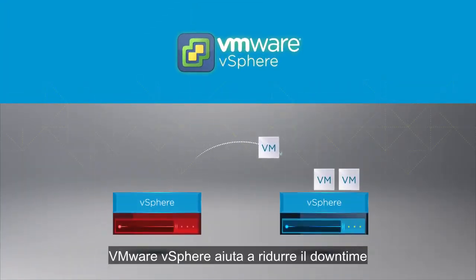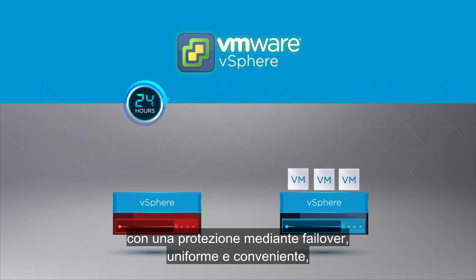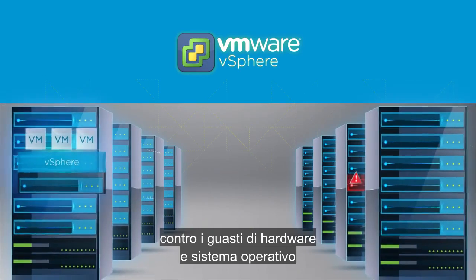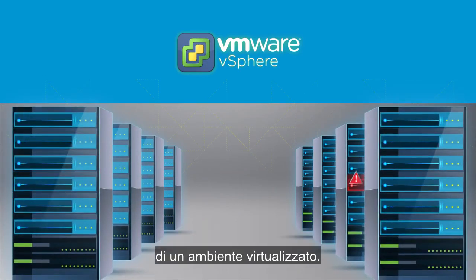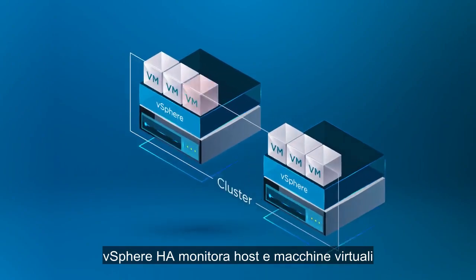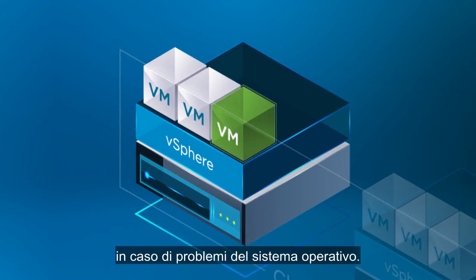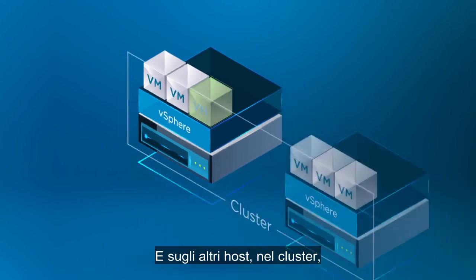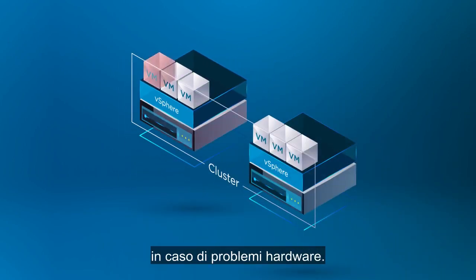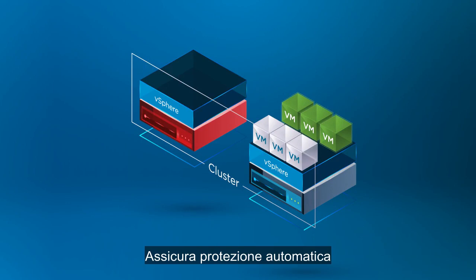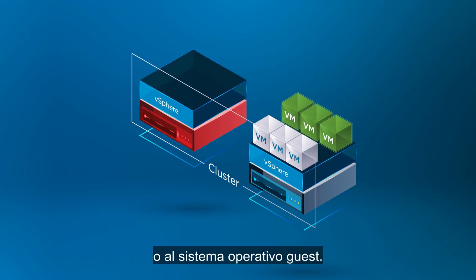VMware vSphere helps minimize downtime with uniform, cost-effective failover protection against hardware and operating system outages within your virtualized environment. vSphere HA monitors hosts and virtual machines, automatically restarting VMs on the same host in the event of an operating system failure and on other hosts in the cluster when a hardware-related problem occurs. It provides automated protection without modifications to the applications or guest operating system.